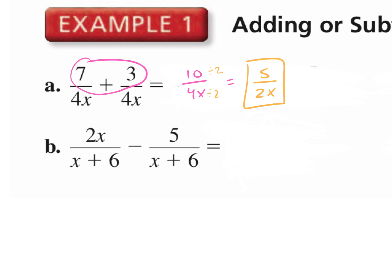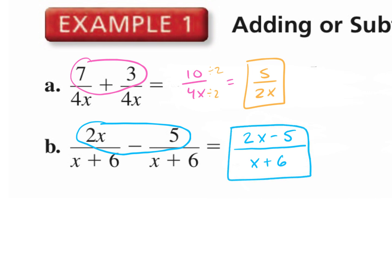Let's look at part b — we are subtracting, so we subtract the numerators. Are these like terms on top? No. So we just write 2x minus 5; we can't combine them because they're not like terms, so we leave it as 2x minus 5 over x plus 6. Could I simplify this? Can I factor the top? No, so we just leave it. Simplify if you can — if you have a GCF or the top factors, try to factor and see if anything cancels, just like in the last section.